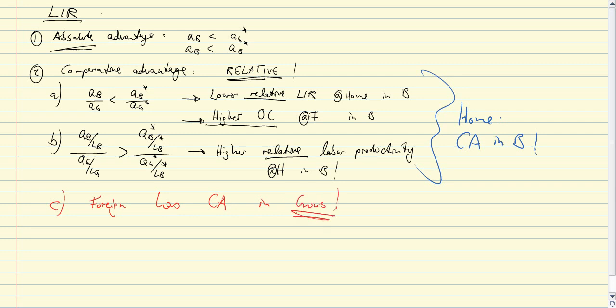Go through that exercise. If you look at AG star over AB star compared to AG over AB, well, AG star over AB star must be smaller than AG over AB, so there are lower relative labor input requirements in the foreign country in the gun sector. So foreign has the comparative advantage in gun production, even though it has an absolute disadvantage in both sectors.